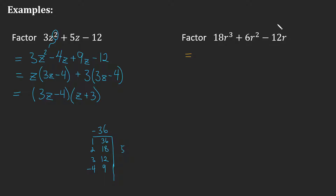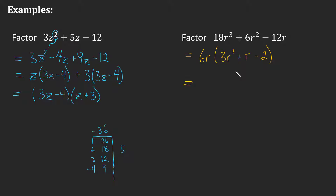For this last example, we always look for a GCF first. I can see a GCF of 6r, so I factor that out and I'm left with 3r² + r − 2. This leaves me with a trinomial in the middle — I need to keep going. Don't stop at just the GCF. Sometimes the remaining trinomial is not factorable, and you'd need the quadratic formula later, but in this case I can continue.